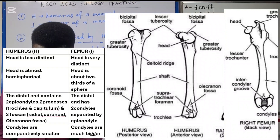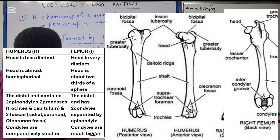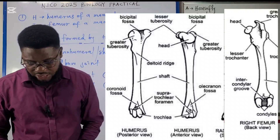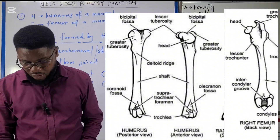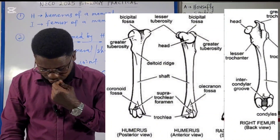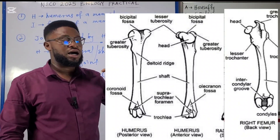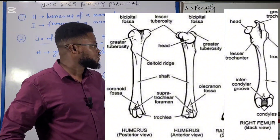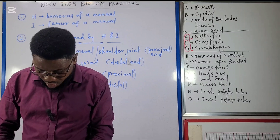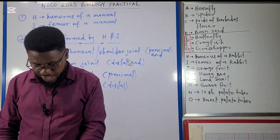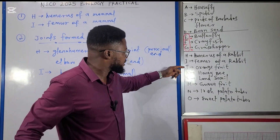Additionally, the condyles of the humerus are comparatively smaller, while the condyles of the femur are much bigger. As for drawing specimens H and I, check the description link of this video for the lecture video on the respective drawings. That covers specimens H and I — let's quickly look at specimens J and M.